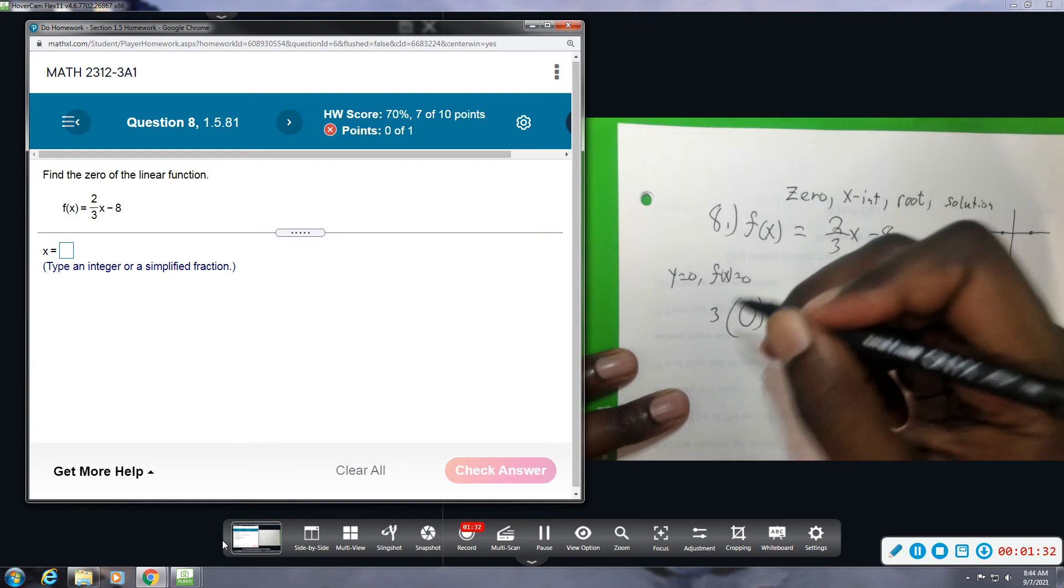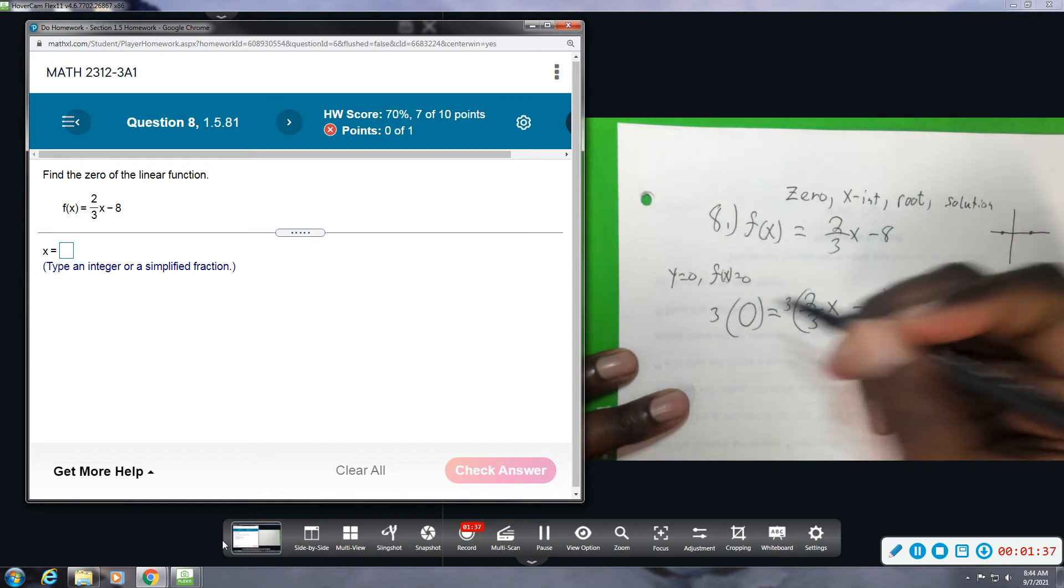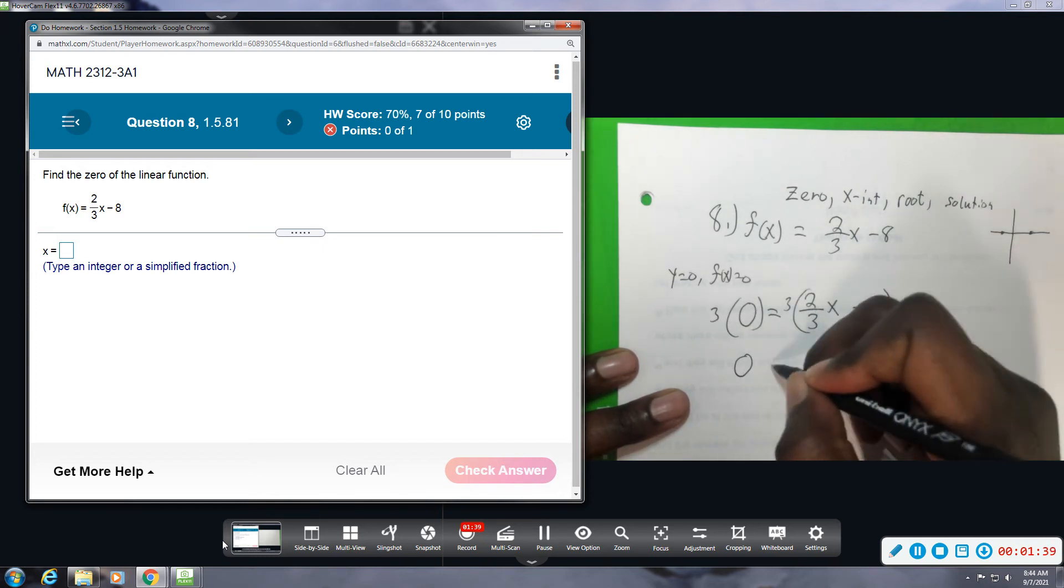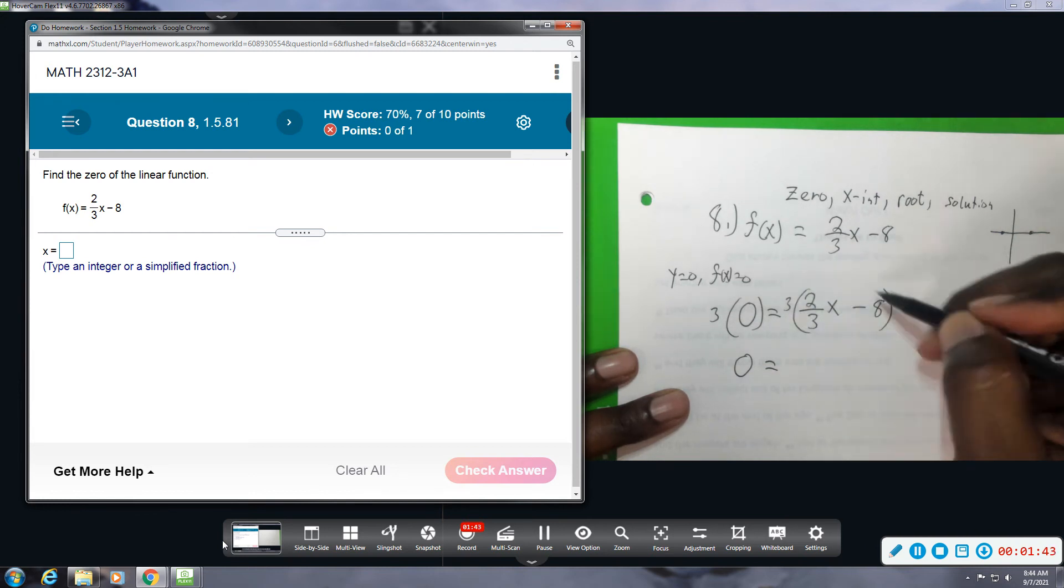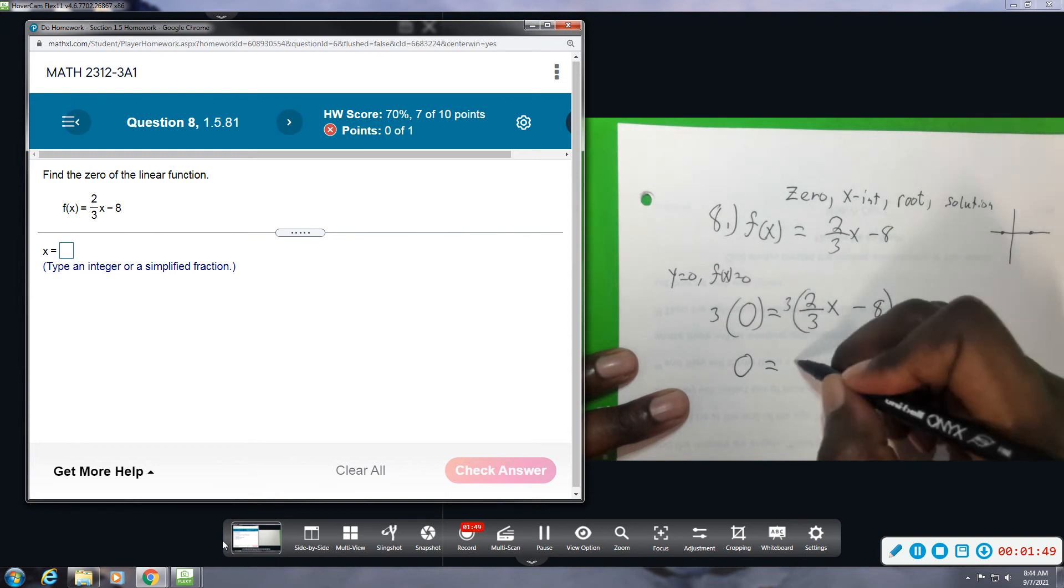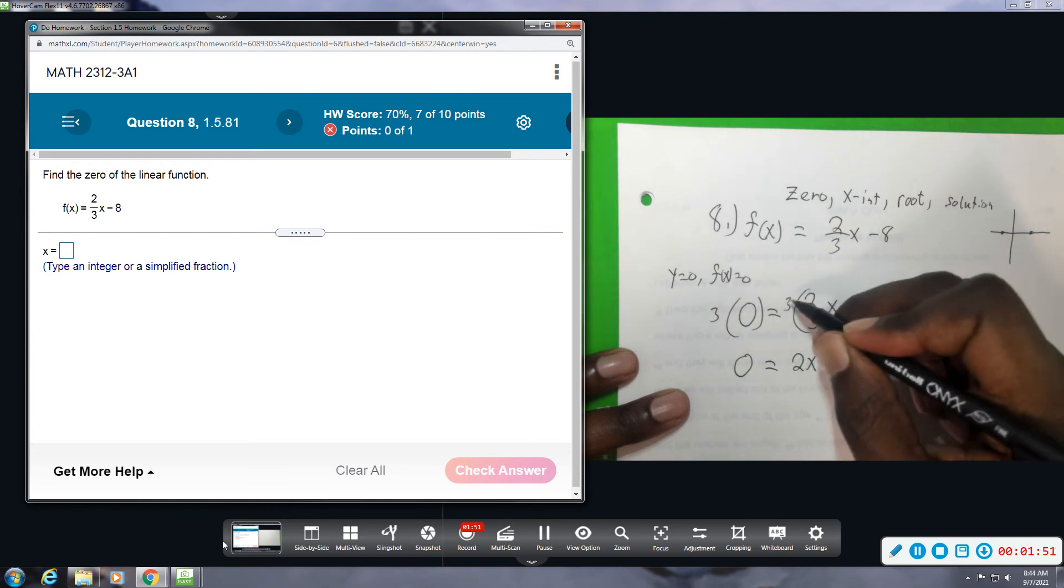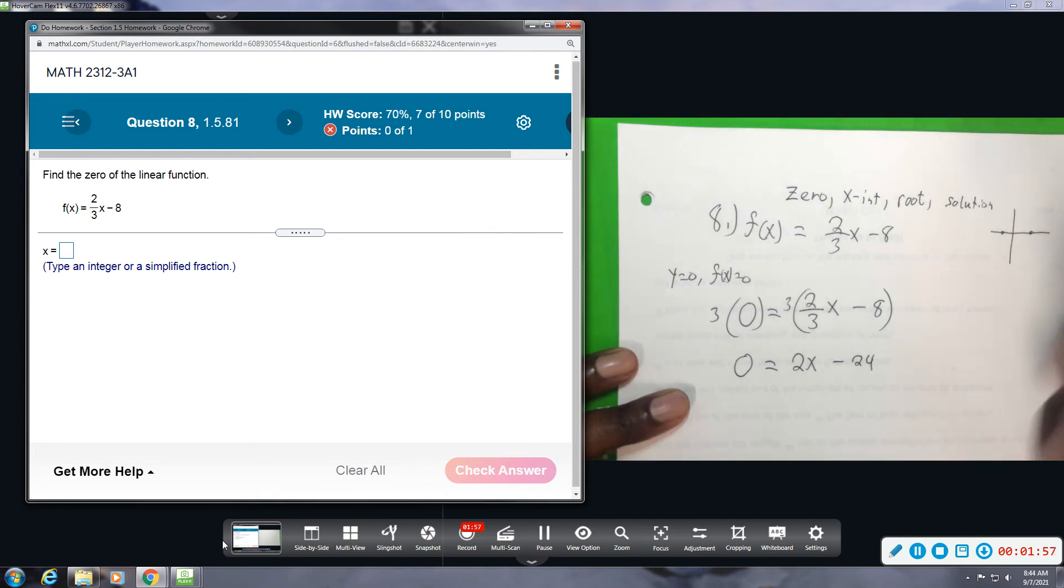So three times zero is still going to be zero. And then over here when you multiply by three, you have to distribute - you do it to both terms. When you multiply three times this fraction, it cancels out the division and that leaves you with 2x. When you multiply three times the negative eight, that will give you a negative 24.